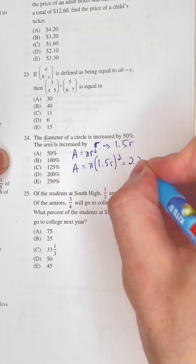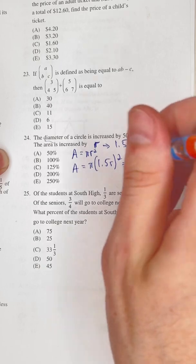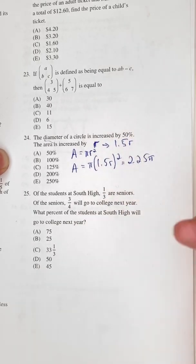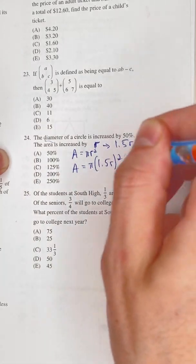And this is equal to 2.25πr². So if we just had 1 here instead of the 2.25, it would be πr². But because it's 50 percent more, we have to subtract 100 percent from this initial thing.